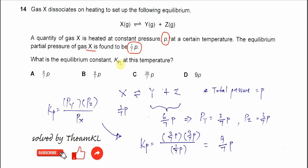What is the equilibrium constant at this temperature? We don't need to use the ICE table in this question. We just use the partial pressure of X and the total pressure.